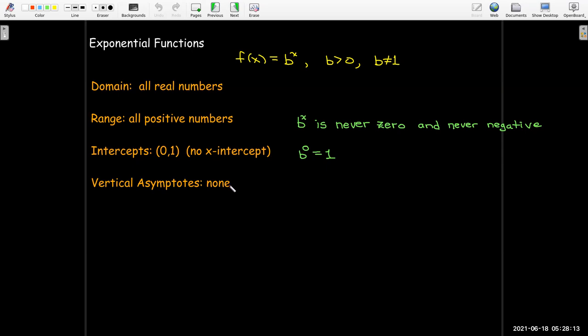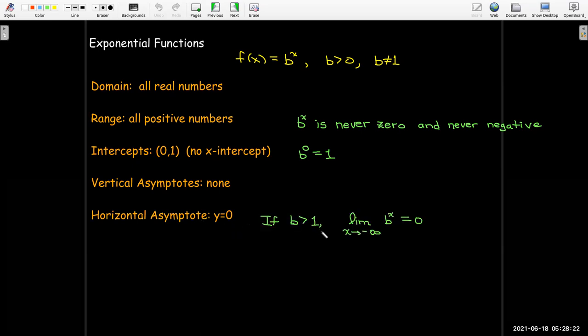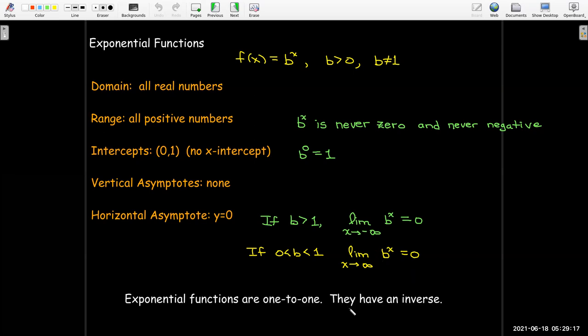It doesn't have a vertical asymptote. That makes sense because the domain is all real numbers. But it does have a horizontal asymptote when y equals 0. If b is greater than 1, as the exponent gets more and more negative, that power gets closer and closer to 0. b raised to the negative 1,000 is 1 over b to the 1,000 power, which is a really small number when b is greater than 1. On the other hand, if I have a number between 0 and 1, then as x goes to infinity, b to the power of x is going to be 0. Exponential functions are 1 to 1 and have an inverse.